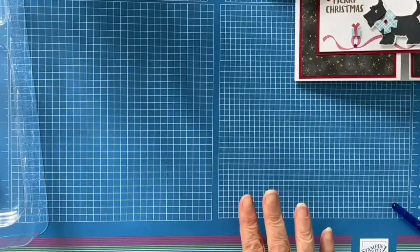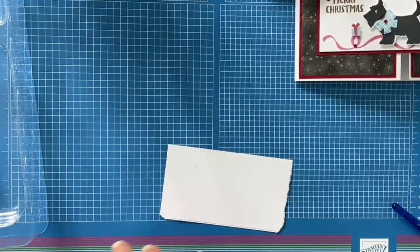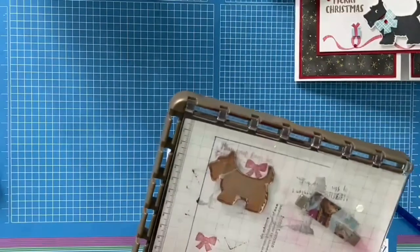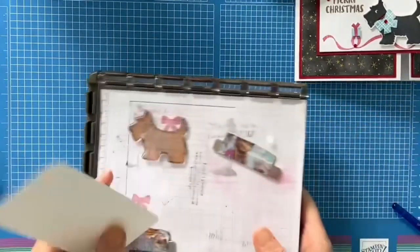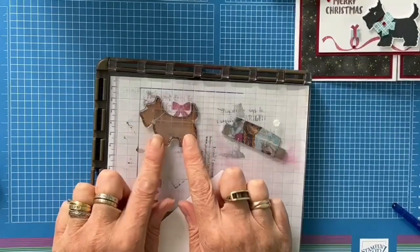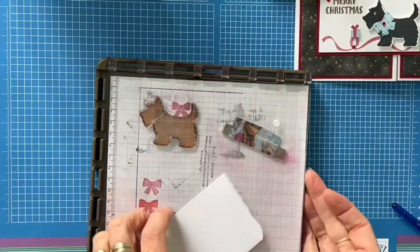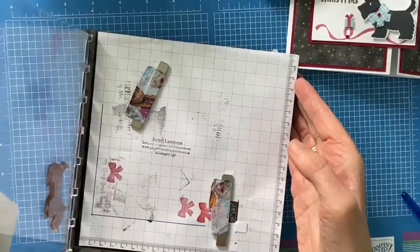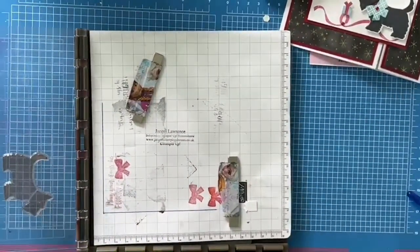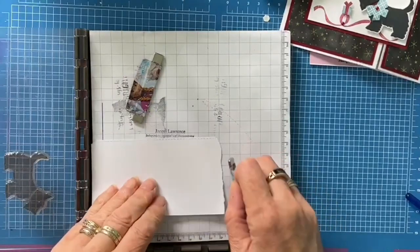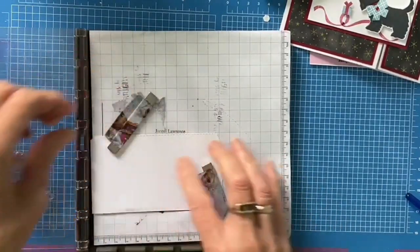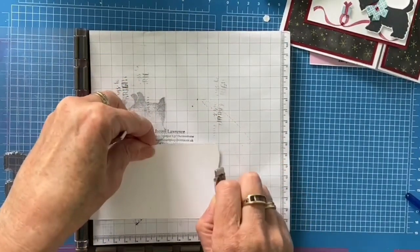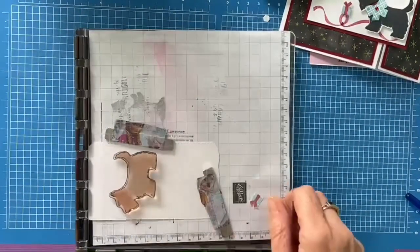Next we need a scrap of basic white. And then I am going to bring over my Stamparatus. Now the reason I am using my Stamparatus platform is because I want the black of the Scotty Dog to be really black. And the only way you are going to achieve that is by using the Stamparatus and doing repeat stamping. So you want the stamp to be in the same place each time. Just make sure that is in the right place.